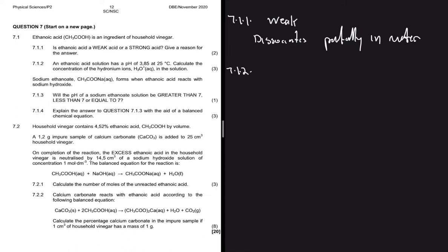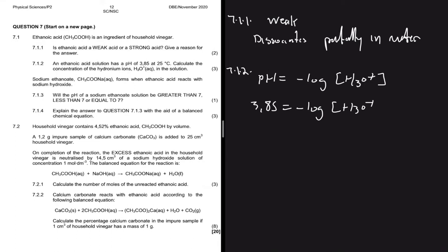We know that pH = −log[H₃O⁺]. The pH is given as 3.85, so: 3.85 = −log[H₃O⁺]. We then multiply everything by −1, giving us −3.85 = log[H₃O⁺].